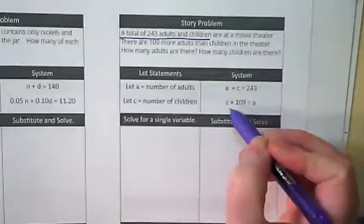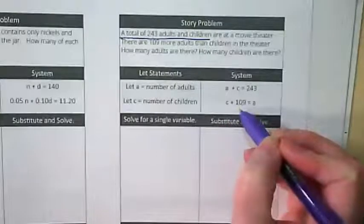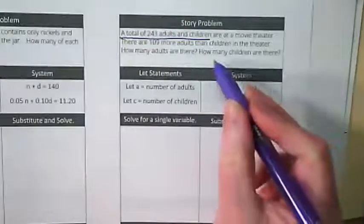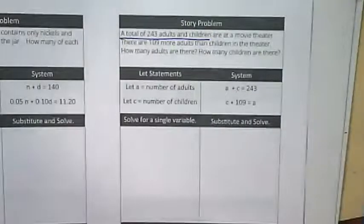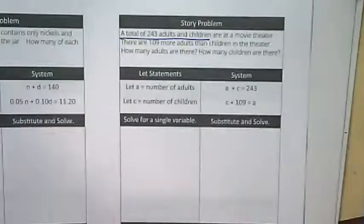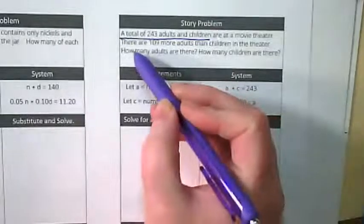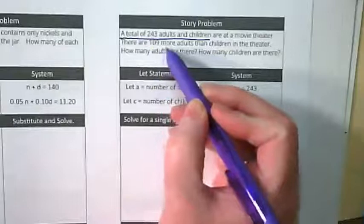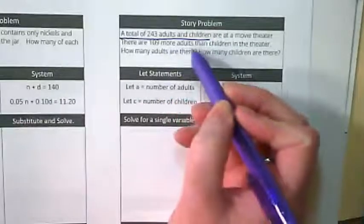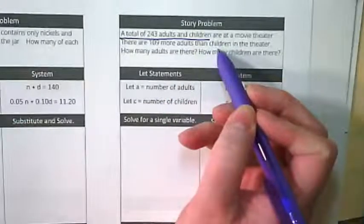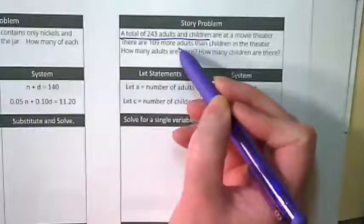Then let's look at this equation. C plus 109 equals A. Children plus 109 equals adults. Read through the word problem again and see where that equation came from. Do you see it in the second sentence? There are 109 more adults than children. Because if you take the children and add 109 more adults, you're going to get the right number.